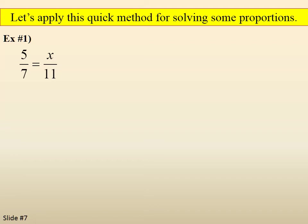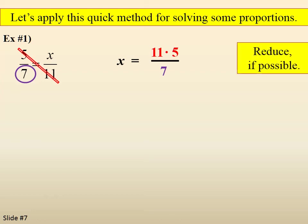Let's apply this quick method for solving some proportions. x equals a fraction where the numerator is made up of the complete diagonal multiplied together: 11 times 5. The denominator is the number opposite the x, which is 7. Reduce if possible - can't in this case - and we end up with 55/7.